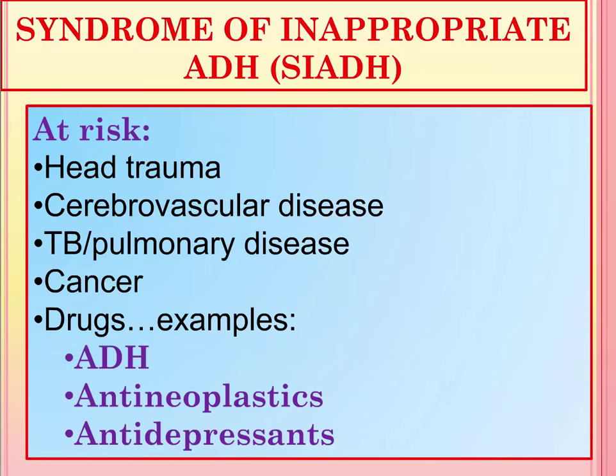Who is at risk for developing SIADH? Individuals who have experienced head trauma, stroke, cerebrovascular disease, meningitis, or encephalitis could be at risk. Patients with TB, pulmonary disease, or some cancers are also at risk — in fact, patients with lung cancer comprise about 75% of cancer patients who develop SIADH. Sometimes people with lung cancer may present with signs and symptoms of SIADH and later discover they have a mass on their lungs. Certain drugs — including antidiuretic hormone used for treating diabetes insipidus, some antineoplastics like vincristine, and some antidepressants — can also cause SIADH.